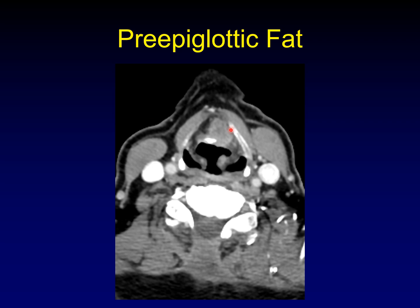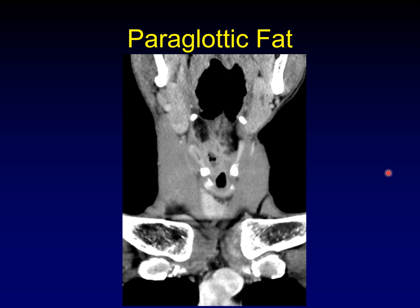Here's that same example with invasion of the preepiglottic fat, and there probably is some infiltration of the paraglottic fat as well, with relative preservation on the other side. Here's another example of involvement of the paraglottic fat — you can use the symmetry of the larynx to see the preserved paraglottic fat on the normal side in this coronal image, while a necrotic tumor is infiltrating the inferior component of the paraglottic fat on the affected side.